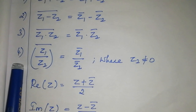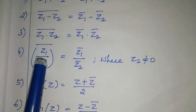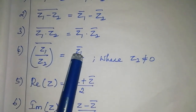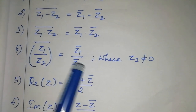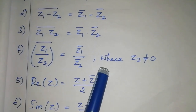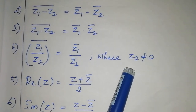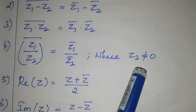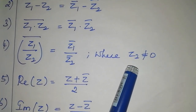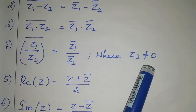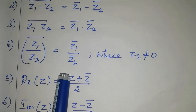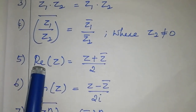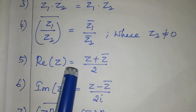The fourth property is: (z1 / z2) bar equals z1 bar divided by z2 bar, where z2 is not equal to zero. That means z2 is a non-zero complex number.